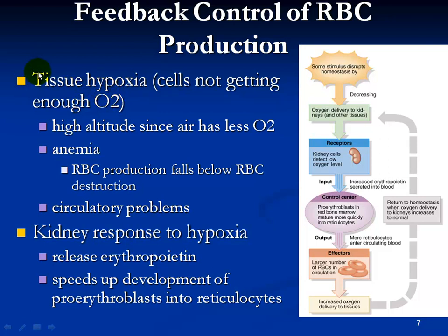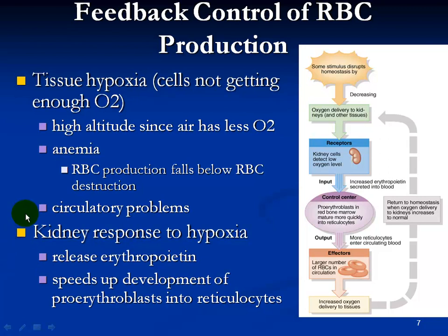The challenge is tissue hypoxia — this is where cells don't get enough oxygen. There are a couple of possibilities: high altitude where air has less oxygen per liter, anemia where red blood cell production is below destruction, iron deficiency, or circulatory problems. The kidney responds to hypoxia by releasing erythropoietin, which is the hormone that speeds up the development of proerithroblasts and creates reticulocytes. On the right you can see the feedback process.